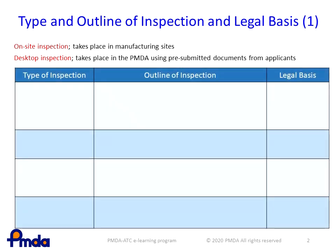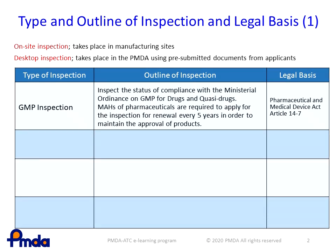This is a list of the types of GMP-GCTP inspections conducted by PMDA. GMP inspection is intended to inspect the status of compliance with the requirements prescribed in the Ministerial Ordinance on Good Manufacturing Practice, GMP for short, for drugs and quasi-drugs. Marketing authorization holders of pharmaceuticals are required to apply for an inspection for renewal every five years in order to maintain the validity of the approval of the products.